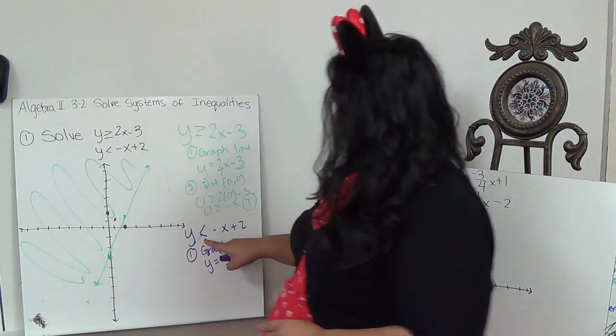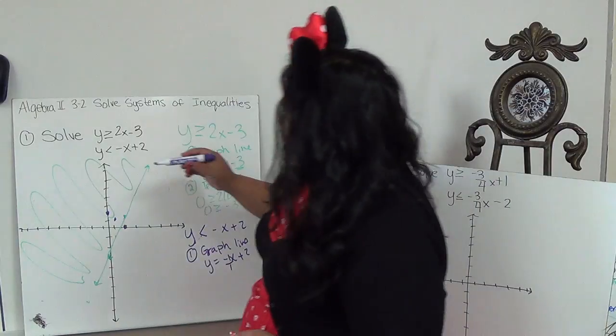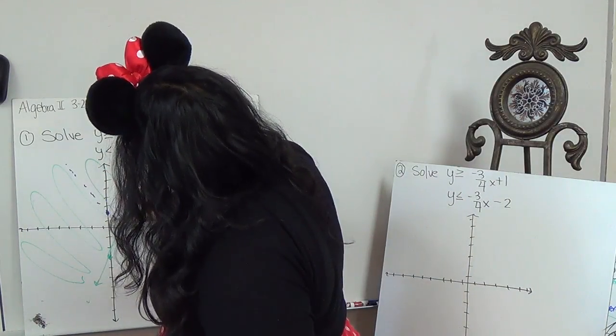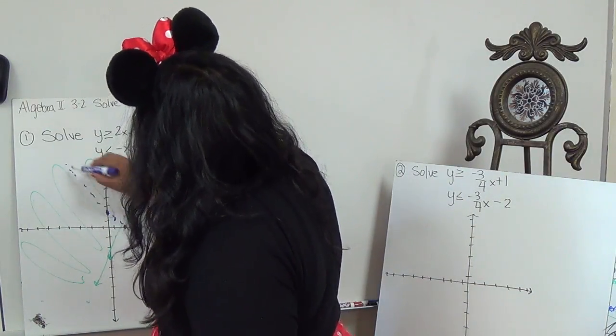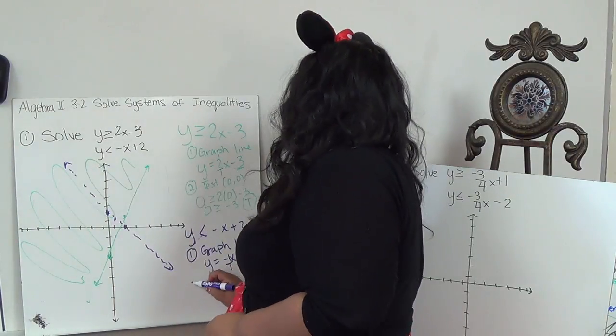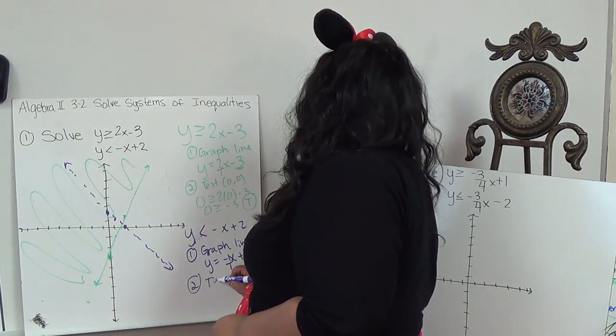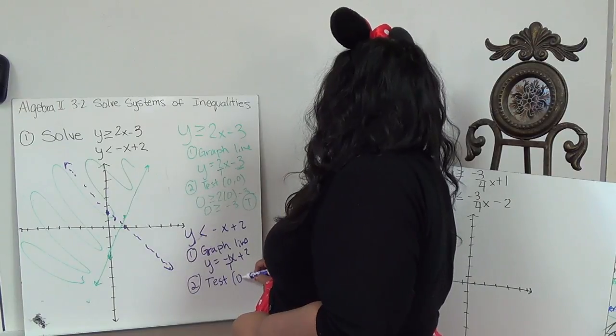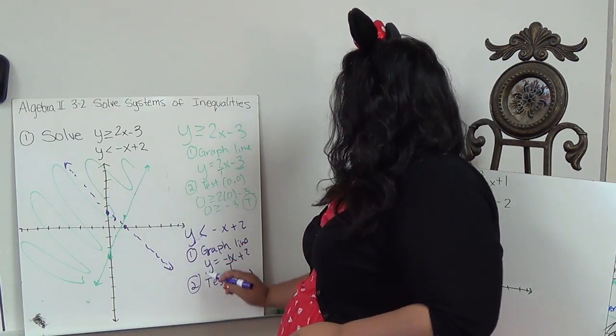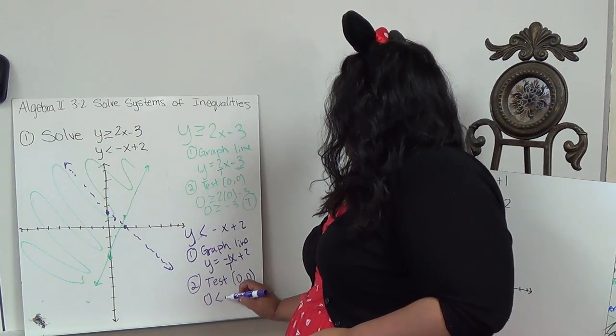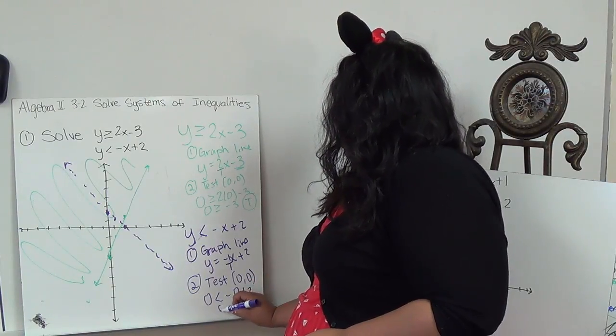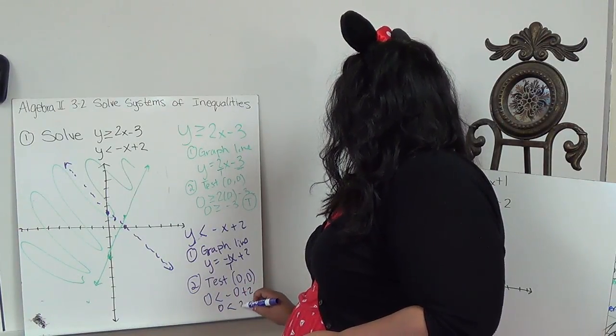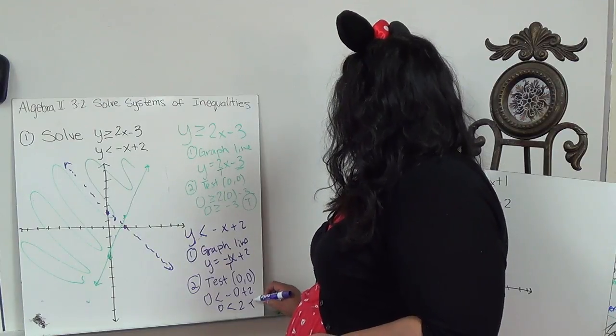And because this has no line underneath, I'm going to do a dash line. 0, 0 is not on the line, so I can use that again to test into my original equation. So it would be 0 is less than negative 0 plus 2. 0 is less than 2. This is true.